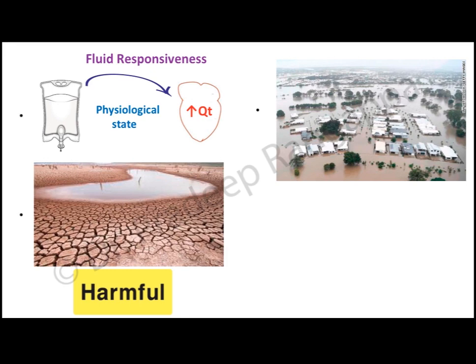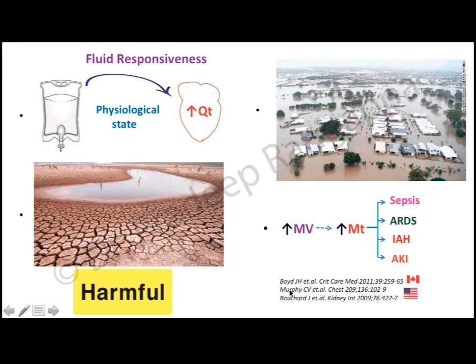Our whole effort over the last two decades has been to find the best tool to determine the right amount of fluid. There are studies showing that giving more fluid can increase the duration of mechanical ventilation, increase the risk of going on a ventilator, and concomitantly increases mortality. This has been found in sepsis patients, ARDS patients, patients with intra-abdominal hypertension, and acute kidney injury — all common ICU situations.